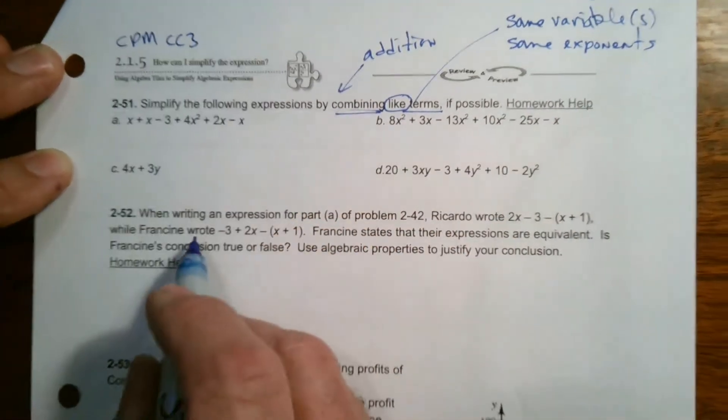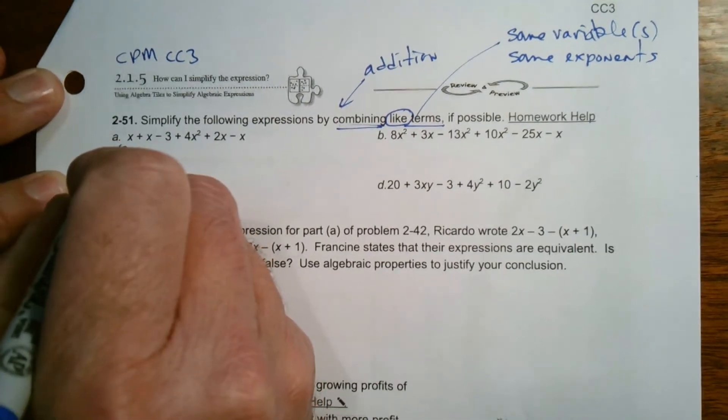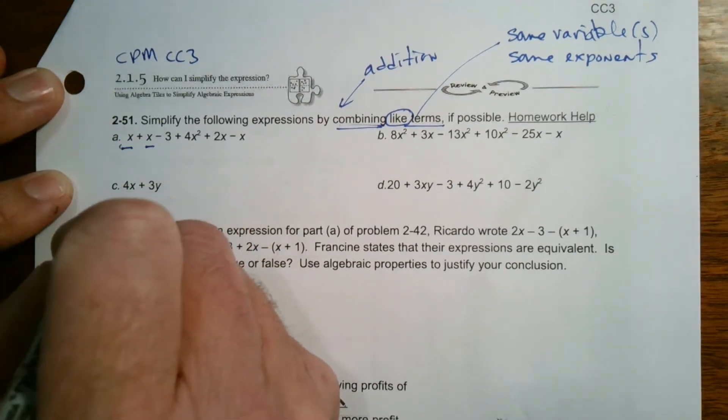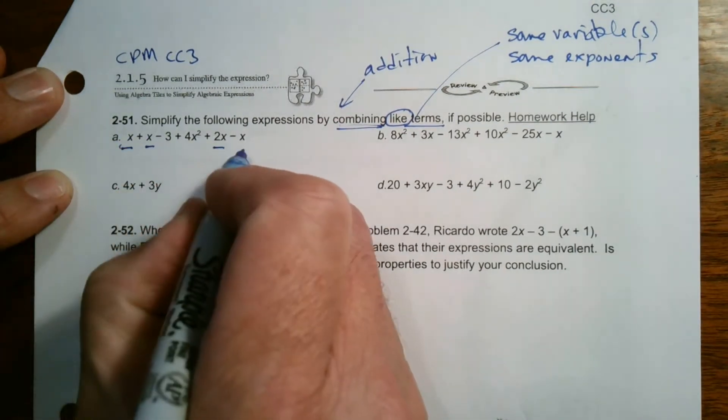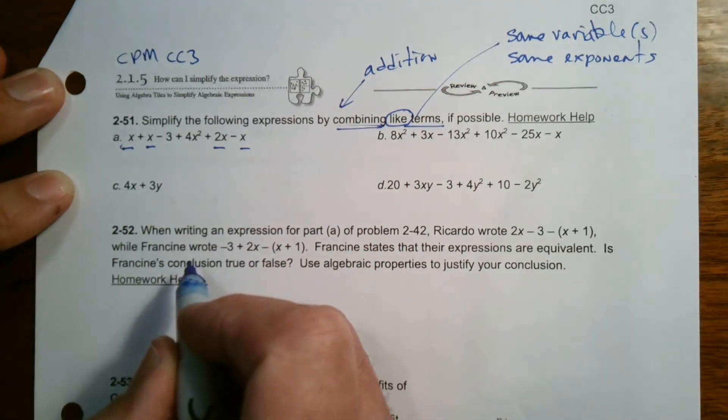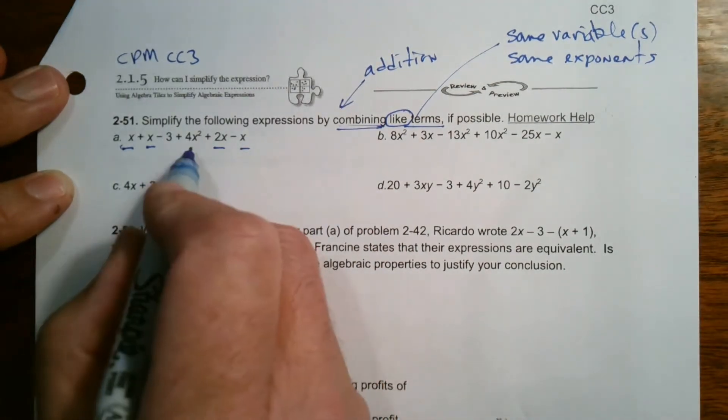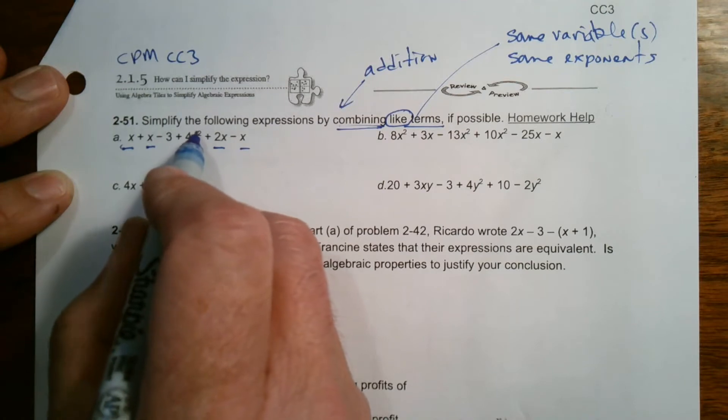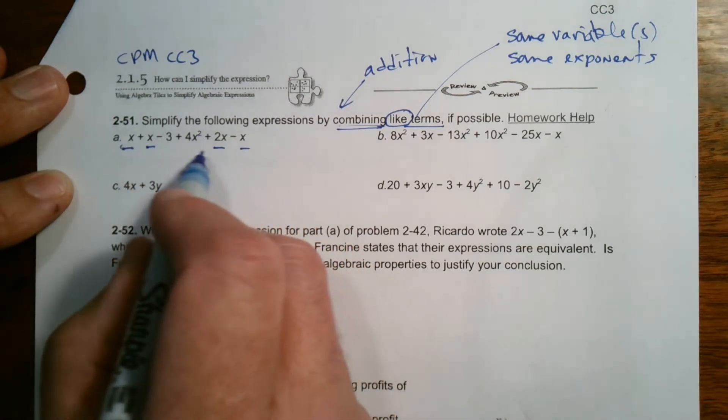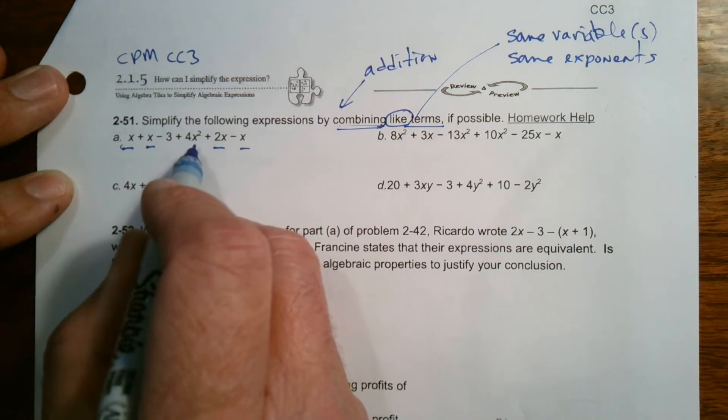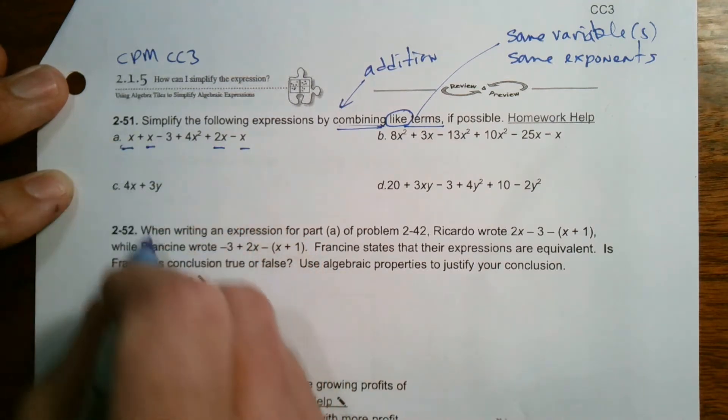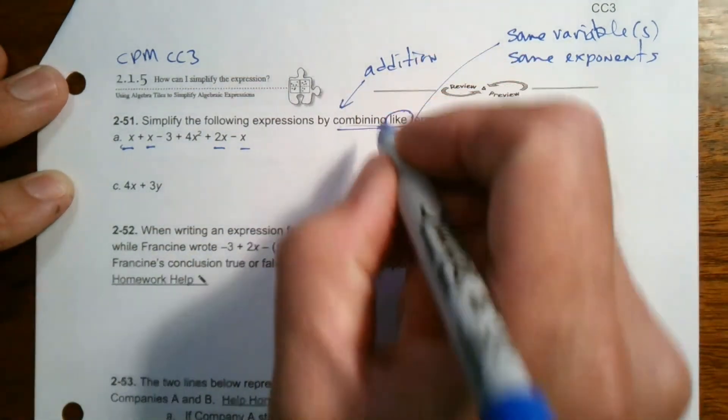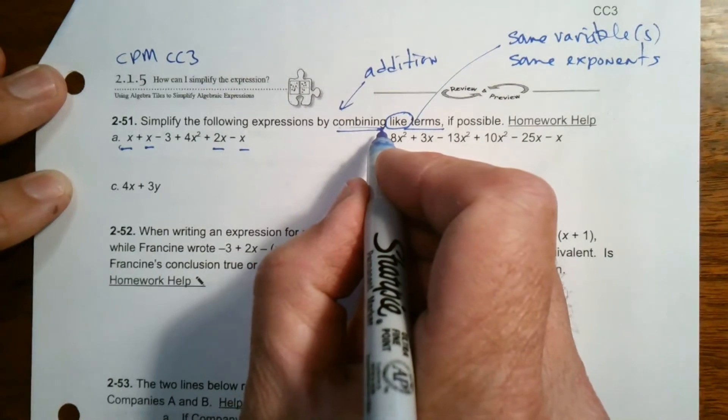So if I look, first of all, if I'm looking at a, I have an X term and an X term, another X term and another X term. So those are the ones that I'm going to combine. This X term here has an exponent of two, but none of them have an exponent of two. So they cannot be combined with that. So first of all, combining is addition.